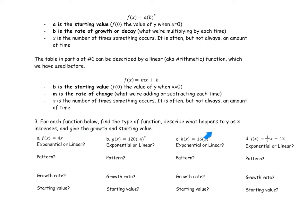For each function, find the type of function, what happens to Y as X increases, and give the growth rate and starting value. I would pause and attempt these yourself first. The first one, Y equals 4X — X is not the exponent, it's just being multiplied by 4. So that one is linear. The pattern is it's going to add 4 each time, which makes our slope 4. Since we have no plus B, this would be plus zero, so our starting value is zero.